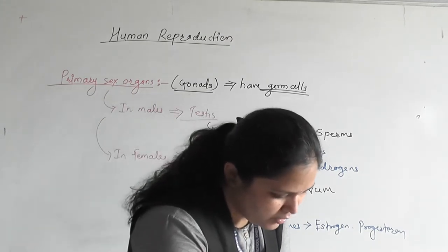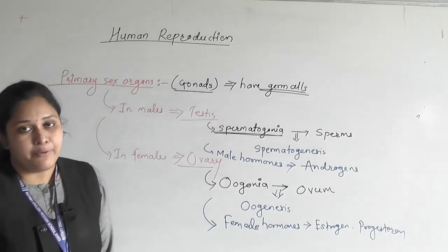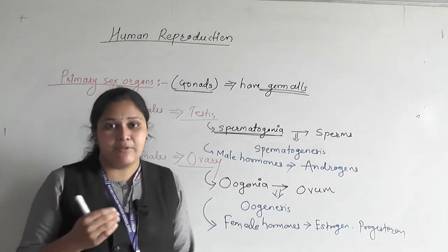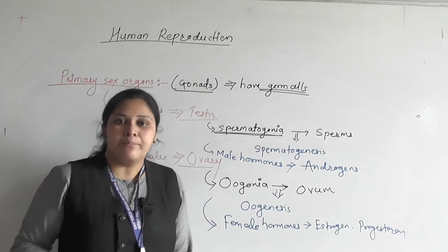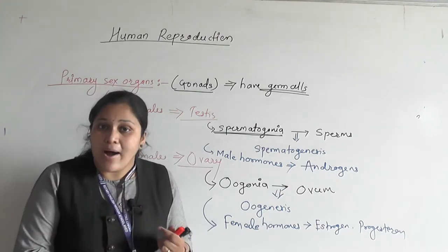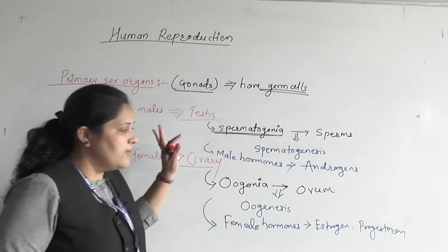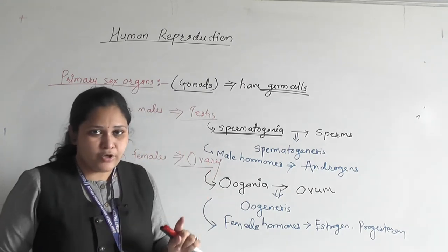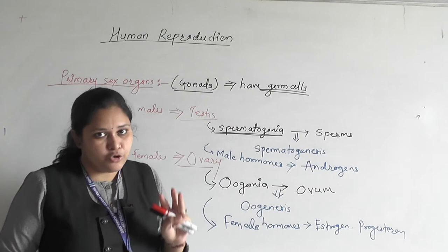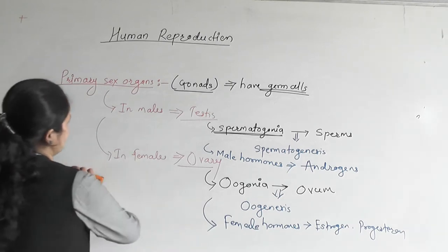Where are these gonads located? Ovaries are intra-abdominal, but testes are extra-abdominal. When they are formed, they are intra-abdominal. Just before birth, they descend out of the abdominal cavity, so they become extra-abdominal. We will study in detail how and why they descend. So primary sex organs perform gametogenesis and hormone production, required for overall reproduction, growth, and development of the whole body.